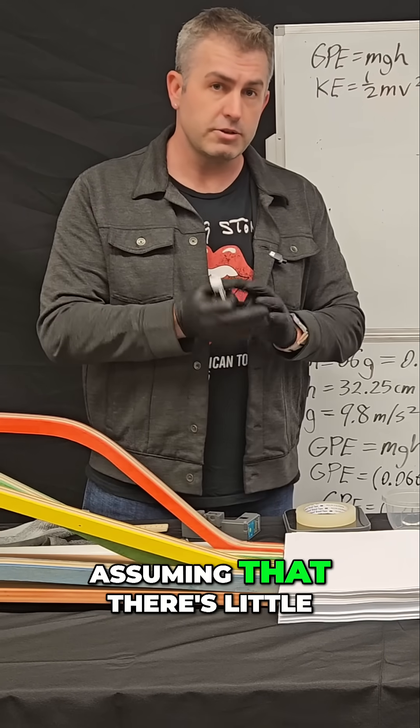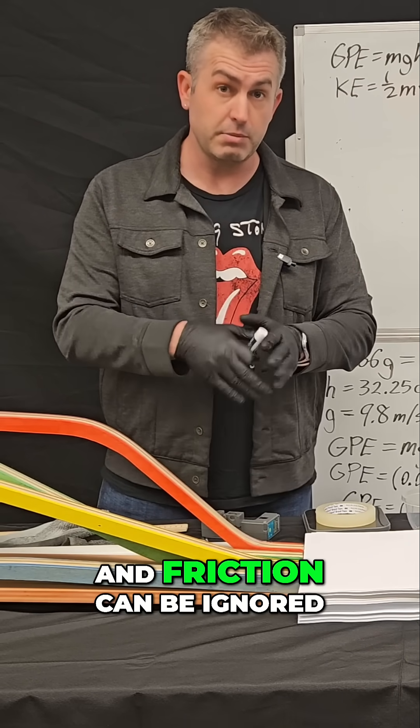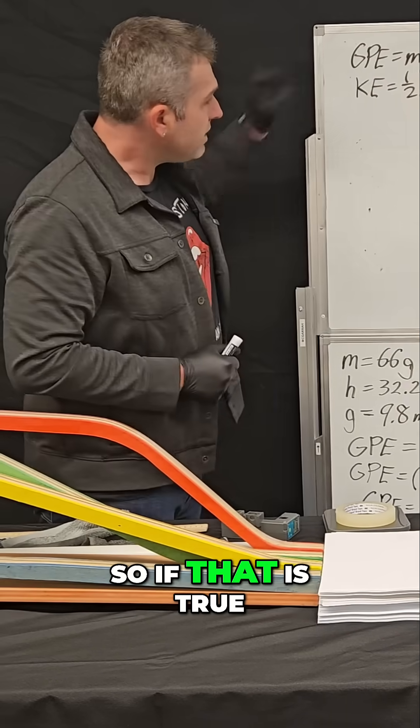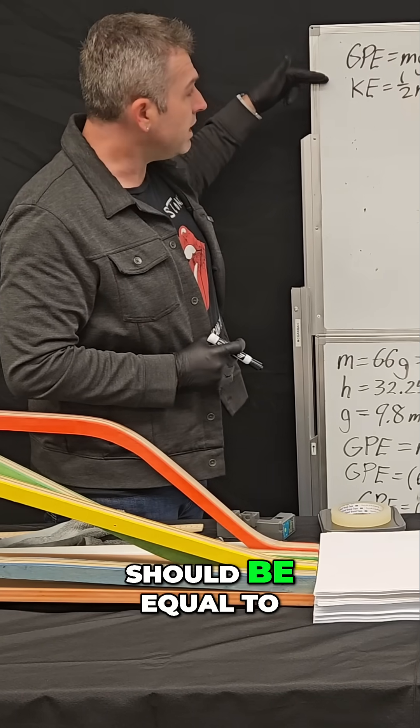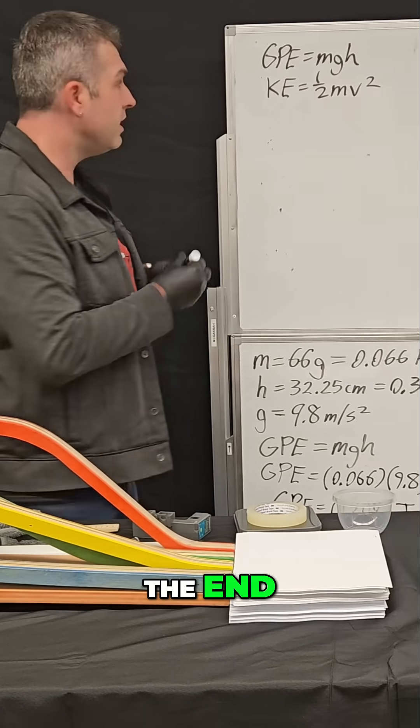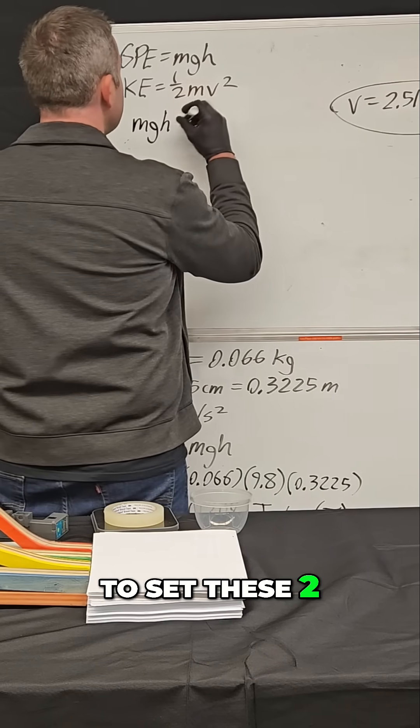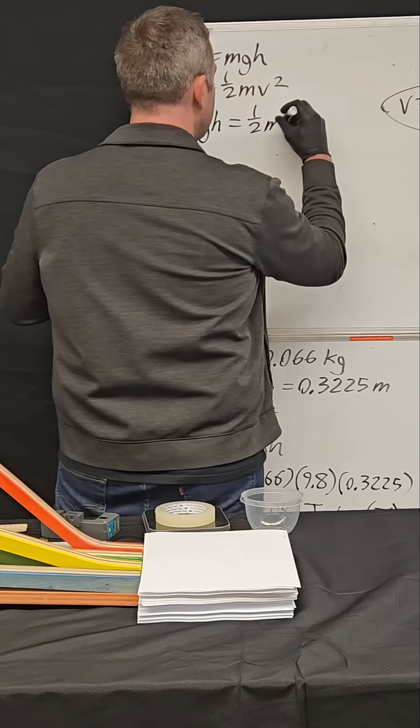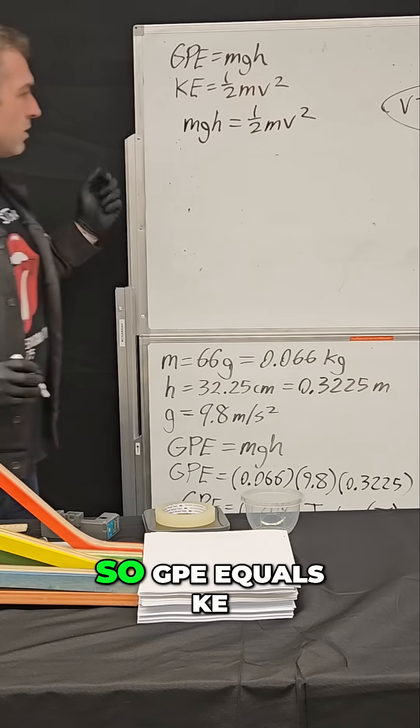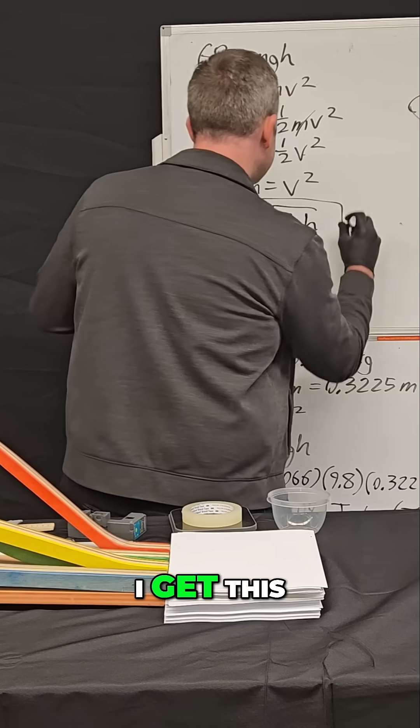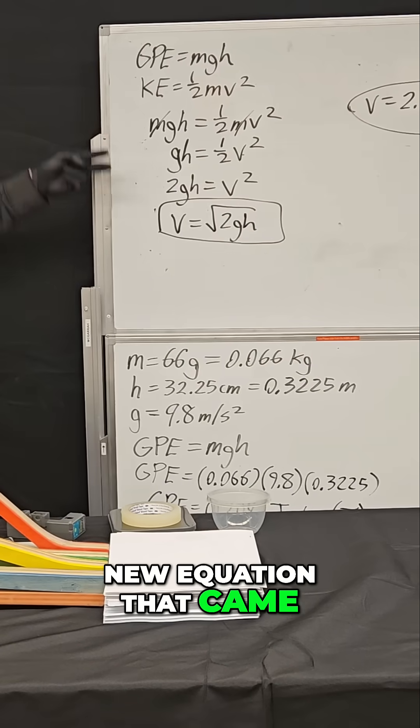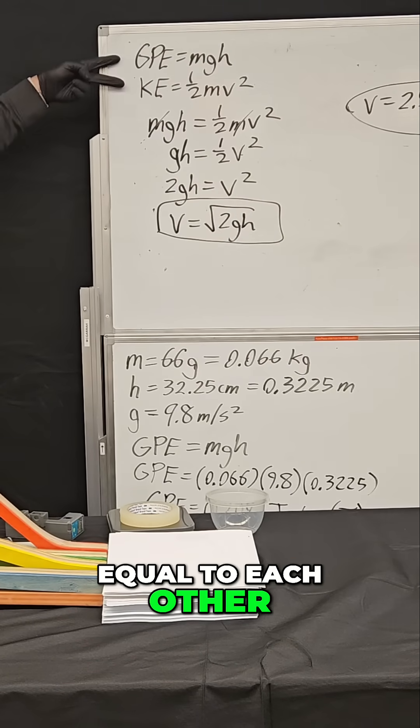Assuming that there's little to no friction and friction can be ignored. So if that is true, then this energy, the GPE at the beginning should be equal to the kinetic energy at the end. And so I should be able to set these two equations equal to each other. So GPE equals KE, and so I get this new equation that came from setting these two equal to each other.